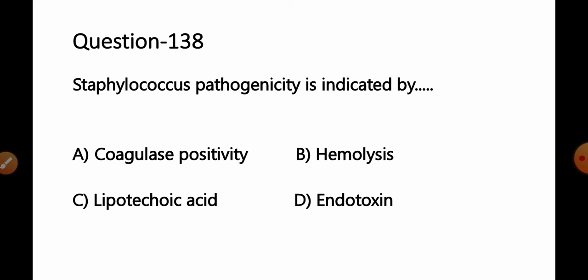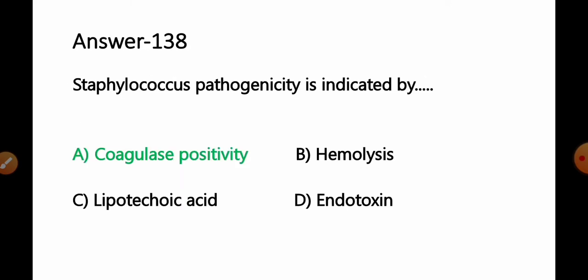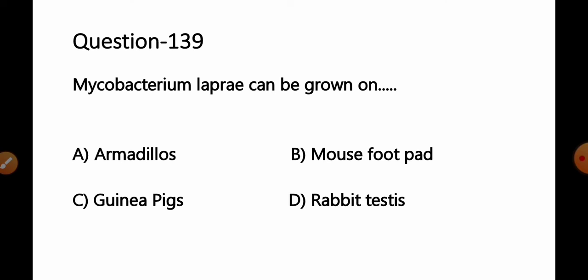Question 138: Staphylococcus pathogenicity is indicated by: option A coagulase positivity/coagulase test, B hemolysis, C lipoteichoic acid, D endotoxins. Bacteria in the genus Staphylococcus are pathogens of man and other mammals, traditionally divided into two groups based on their ability to clot blood plasma — coagulase positivity. Coagulase-positive staphylococci constitute the most pathogenic species, Staphylococcus aureus, which is coagulase positive. Option A coagulase positivity is the correct answer.